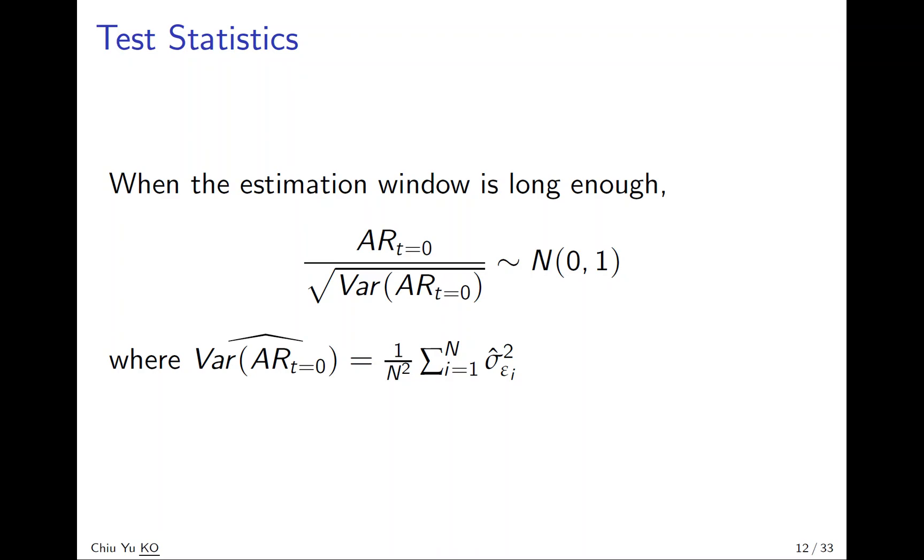And the difference is now the variance is like one over N squared, because of the summation of N different standard deviations.